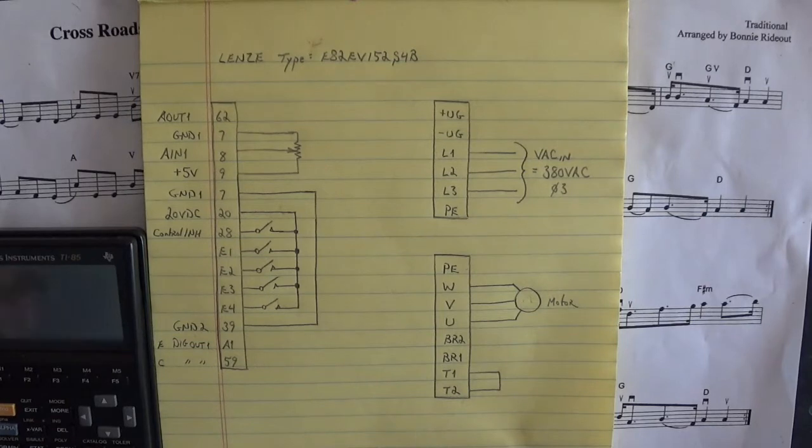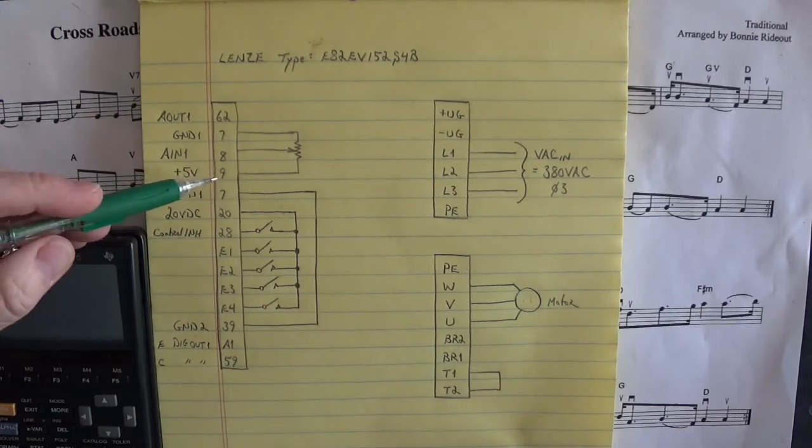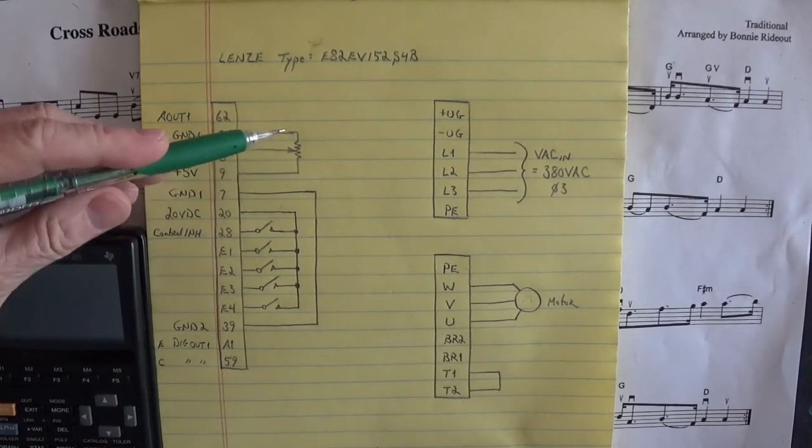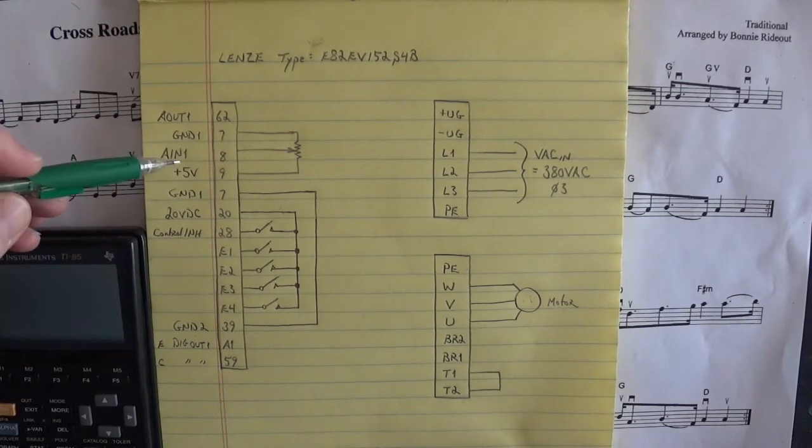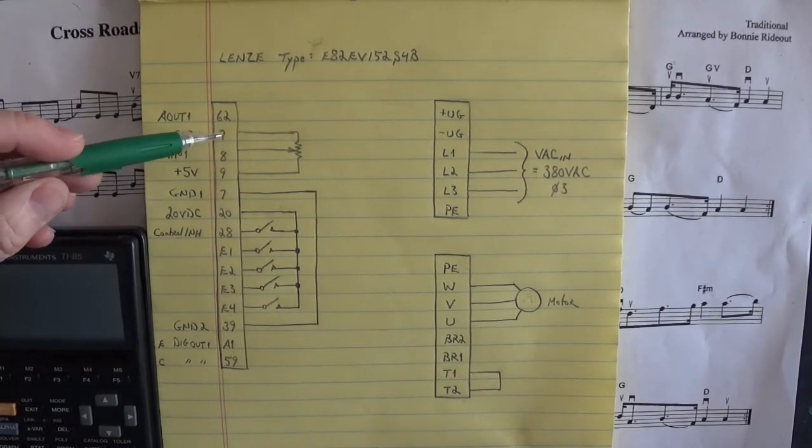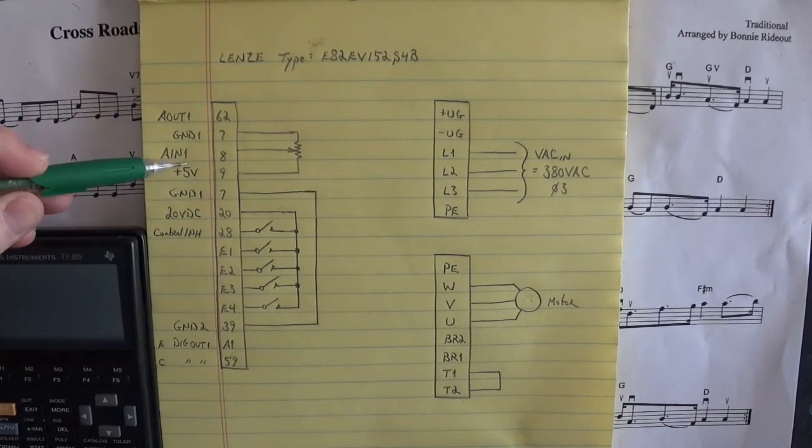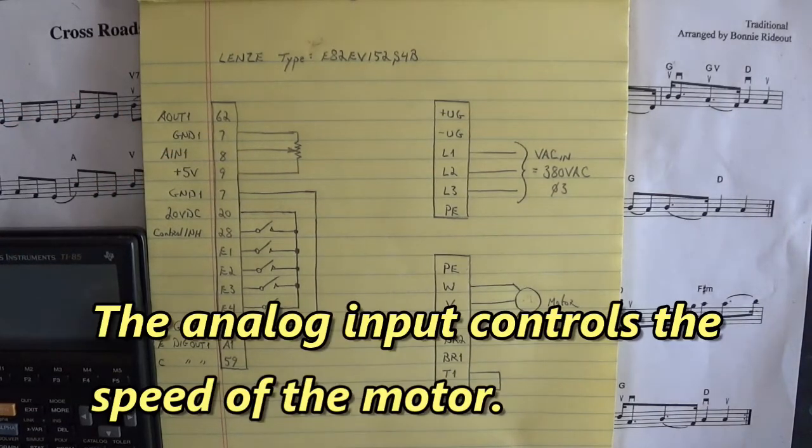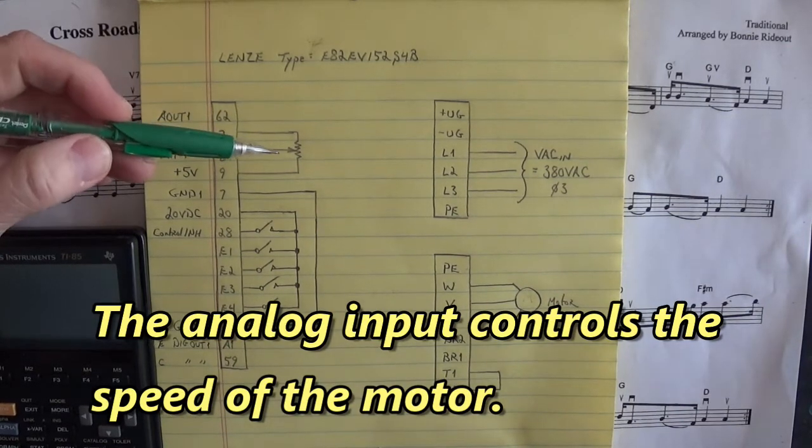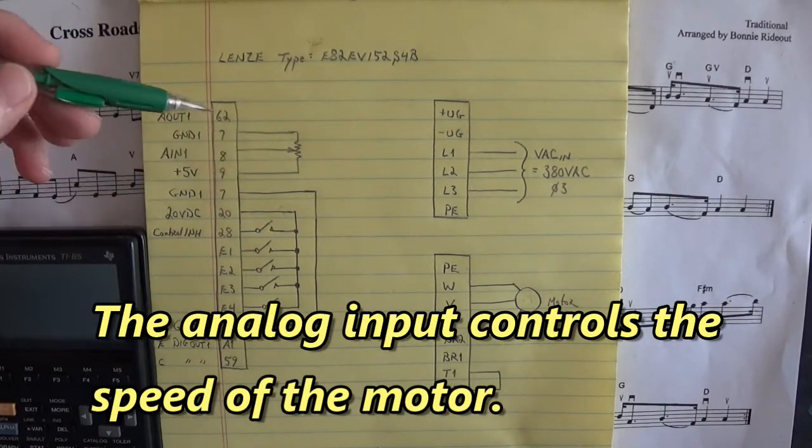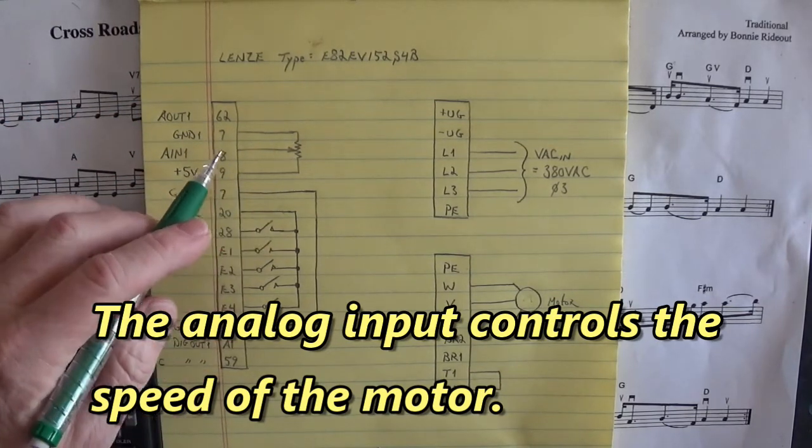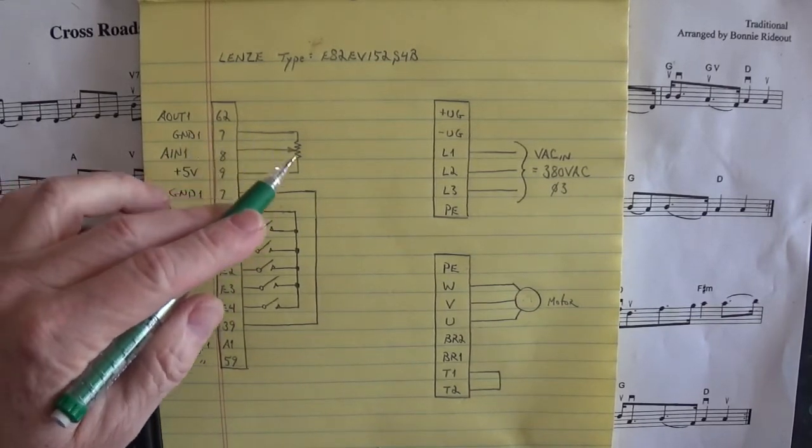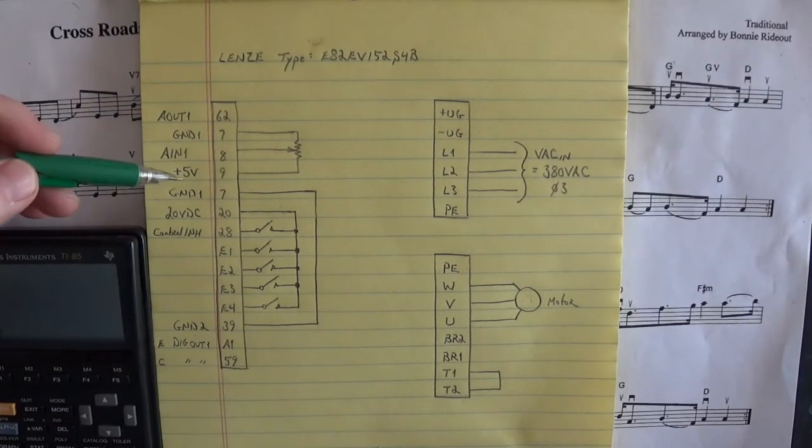On terminal 9 of that IO module you have 5 volts. This is for the external analog input. Ground 1 is on pin 7 and the analog input is on pin 8. So you put your 2 kilohm to 5 kilohm potentiometer out here, have the wiper go to pin 8, and the wings of the potentiometer go to pin 9 and pin 7.